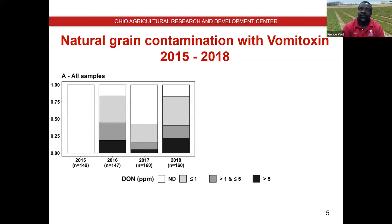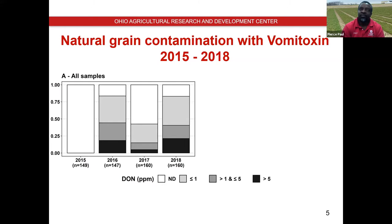We also looked at vomitoxin levels in ears that looked healthy — no visual symptoms of Gibberella ear rot, no mold. In 2016, about 80% of those samples had detectable levels of vomitoxin even though we did not see mold on the ears. About 30% had vomitoxin between one and five parts per million, and about 5% had greater than five parts per million. A similar trend was observed in 2018.